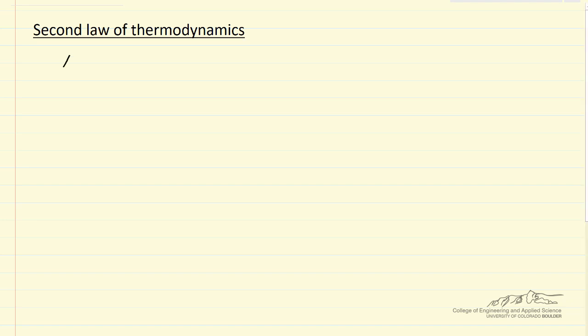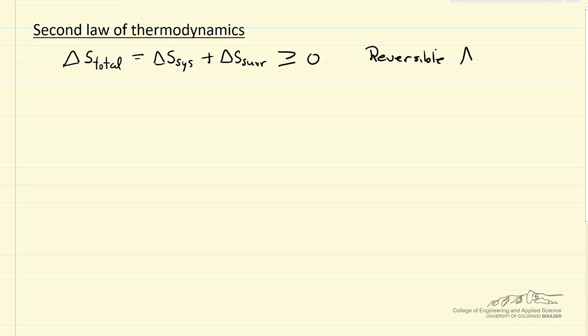Here I'm going to briefly go over some aspects of the second law of thermodynamics, which essentially says that when we calculate an entropy change — in this case a total entropy change, meaning the system plus the surroundings — the total is greater than or equal to zero. If it's reversible, then delta S total equals zero, and if it's irreversible, delta S total must be greater than zero. Any real system is going to be irreversible.